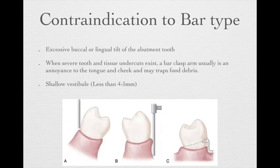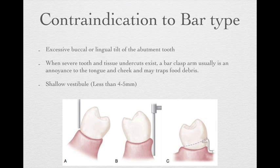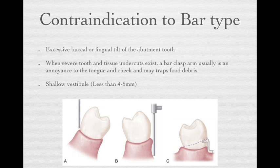In some circumstances, we cannot design the bar type. First, when the tooth has excessive buccal or lingual tilt, making it impossible to find a proper undercut location. Second, when the tooth or tissue has a severe undercut. The bar clasp can also be annoying to the tongue and cheek, and may trap food debris. Also, when there is a shallow vestibule — less than 4 to 5 millimeters from the gingival margin to the bottom of the vestibule — it is impossible to maintain the required thickness and distance, so in those circumstances, you cannot design the bar type.